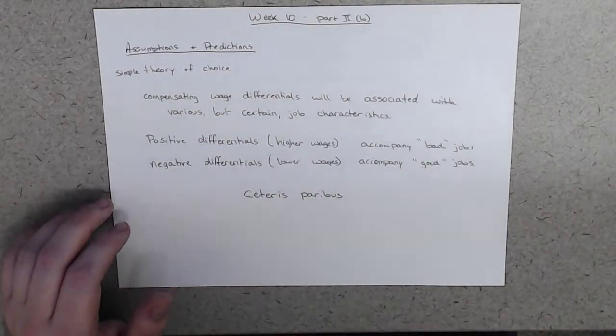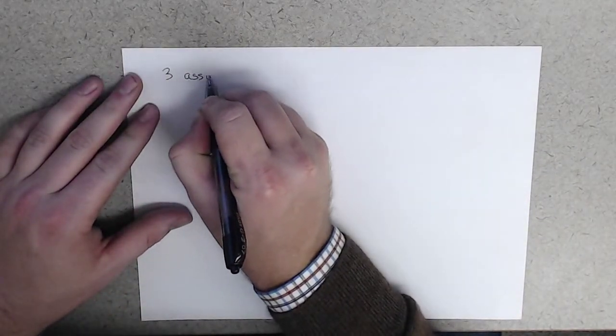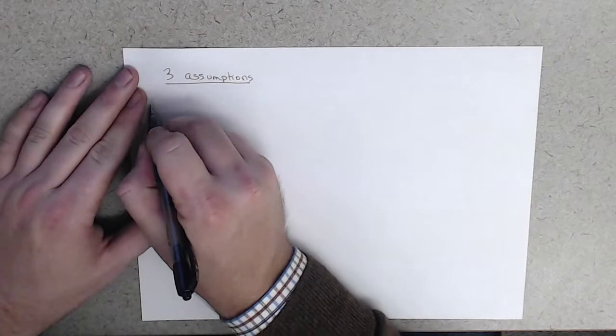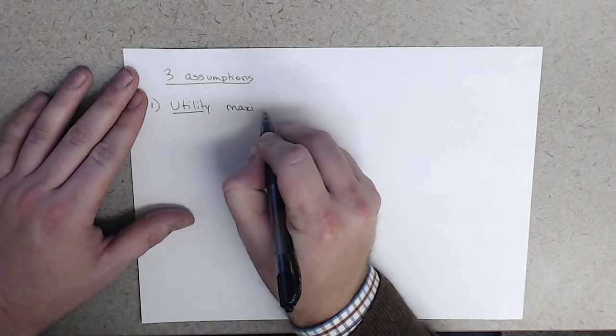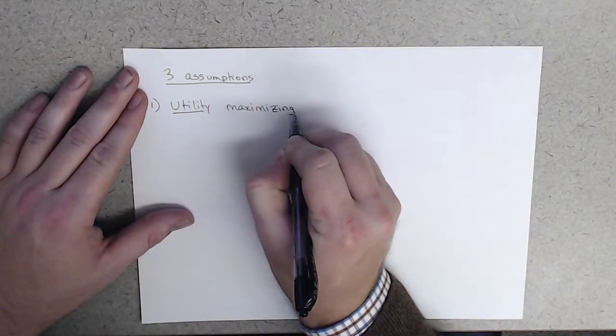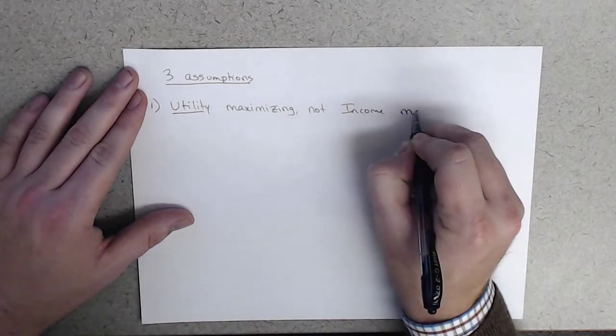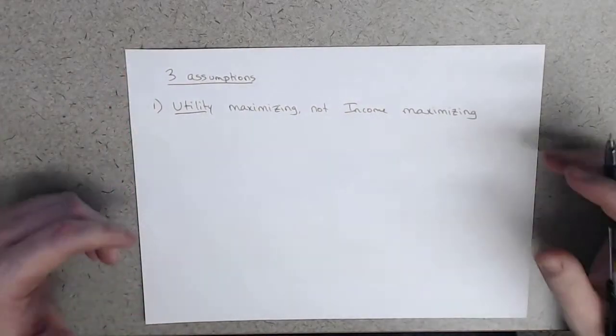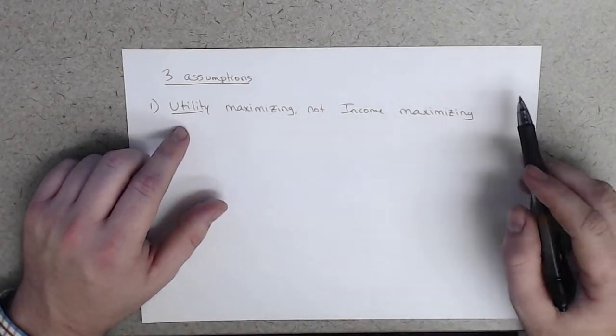We've also implicitly been making three assumptions throughout this exercise. The first one is that people are utility maximizing, that people maximize their utility or their happiness and not their income.